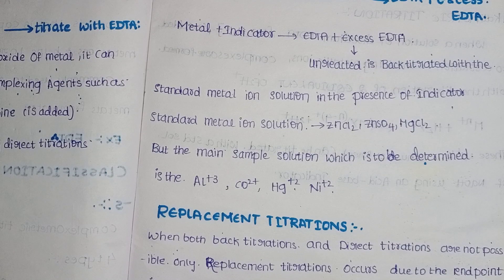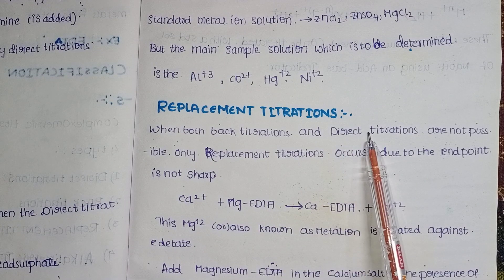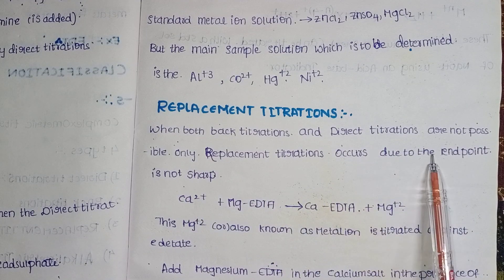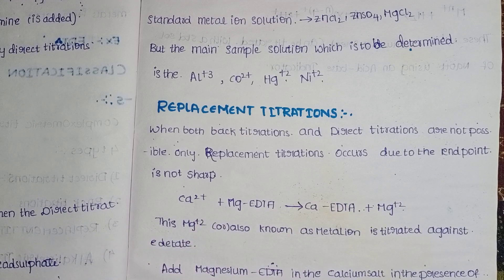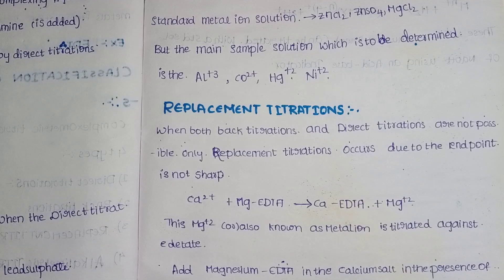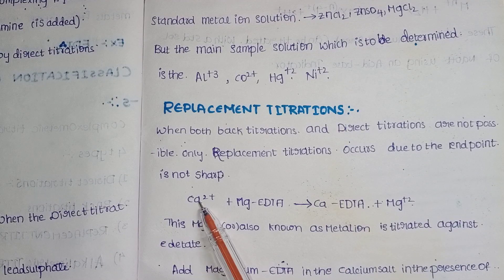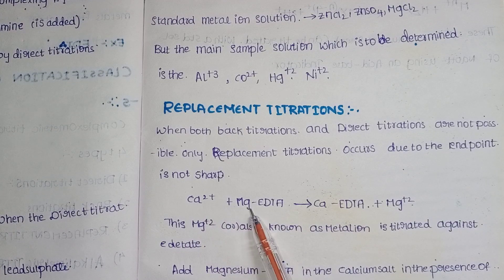The third type is replacement titration. Replacement means one metal ion replaces another metal ion. When both back titrations and direct titrations are not possible — only when the end point is not sharp — replacement titration is used. For example, calcium is reacted with magnesium EDTA, and calcium displaces magnesium and forms a stable calcium EDTA complex.